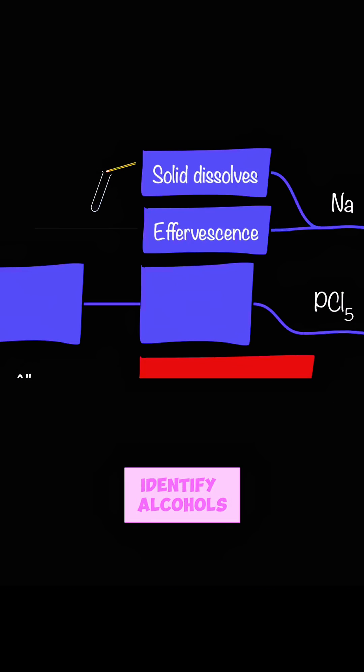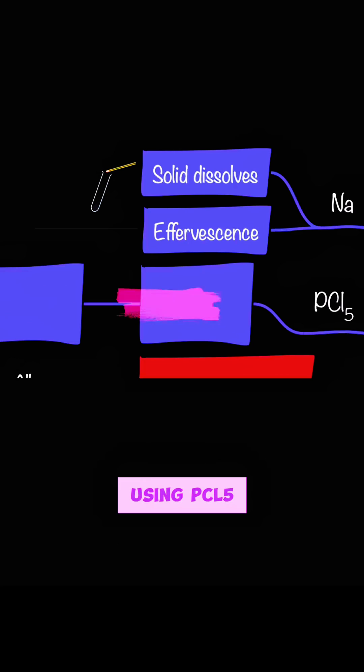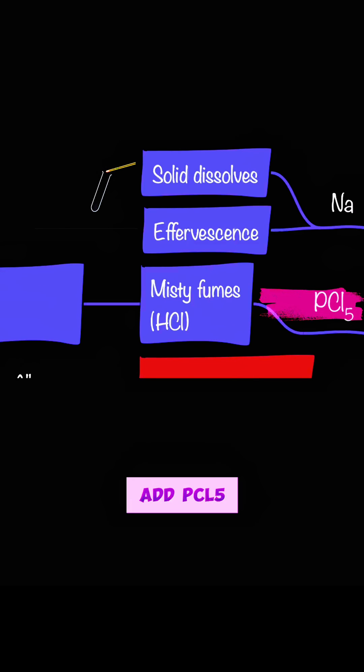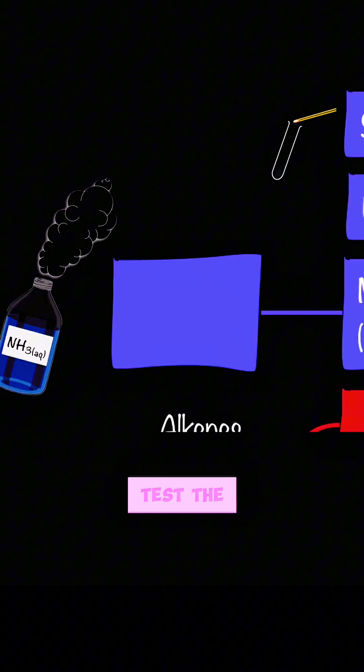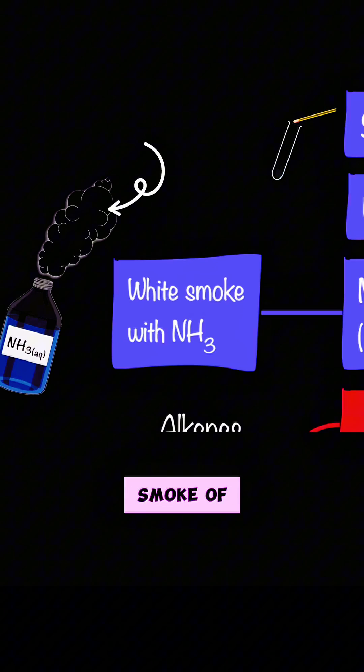The second way to identify alcohols is by using PCl5. When you add PCl5 to alcohols, they'll be producing misty fumes of hydrogen chloride. You can test the hydrogen chloride by using ammonia, producing white smoke of ammonium chloride.